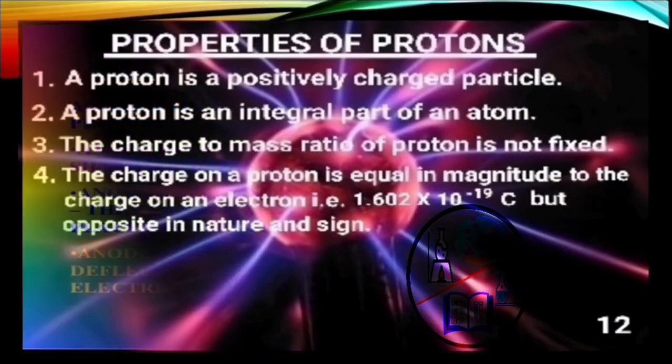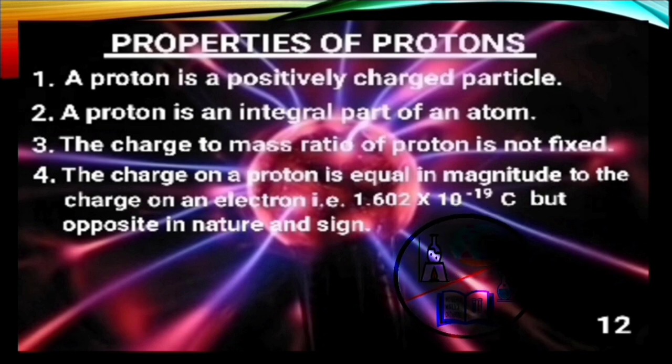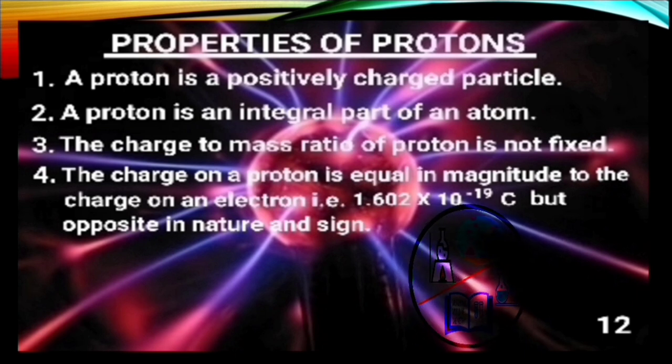Now let's see the properties of protons. A proton is a positively charged particle. A proton is an integral part of an atom. The charge to mass ratio of proton is not fixed. It is because different gases have different types of positive rays which contain particles of different mass and charge. So the ratio varies. The nature of anode rays depends on the gas which is taken in the discharge tube as these rays are produced from them.